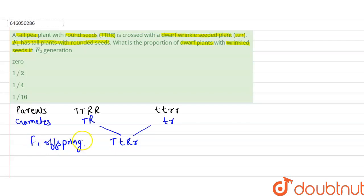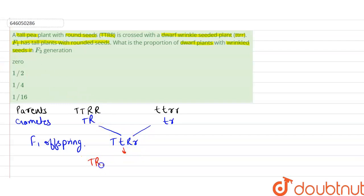Now we have to find the proportion of dwarf plants with wrinkled seeds in the F2 generation. In F2 generation we do self-pollination of F1 offspring, that is Tt Rr self-pollinated. The gametes produced will be: TR, Tr, tR, and tr.